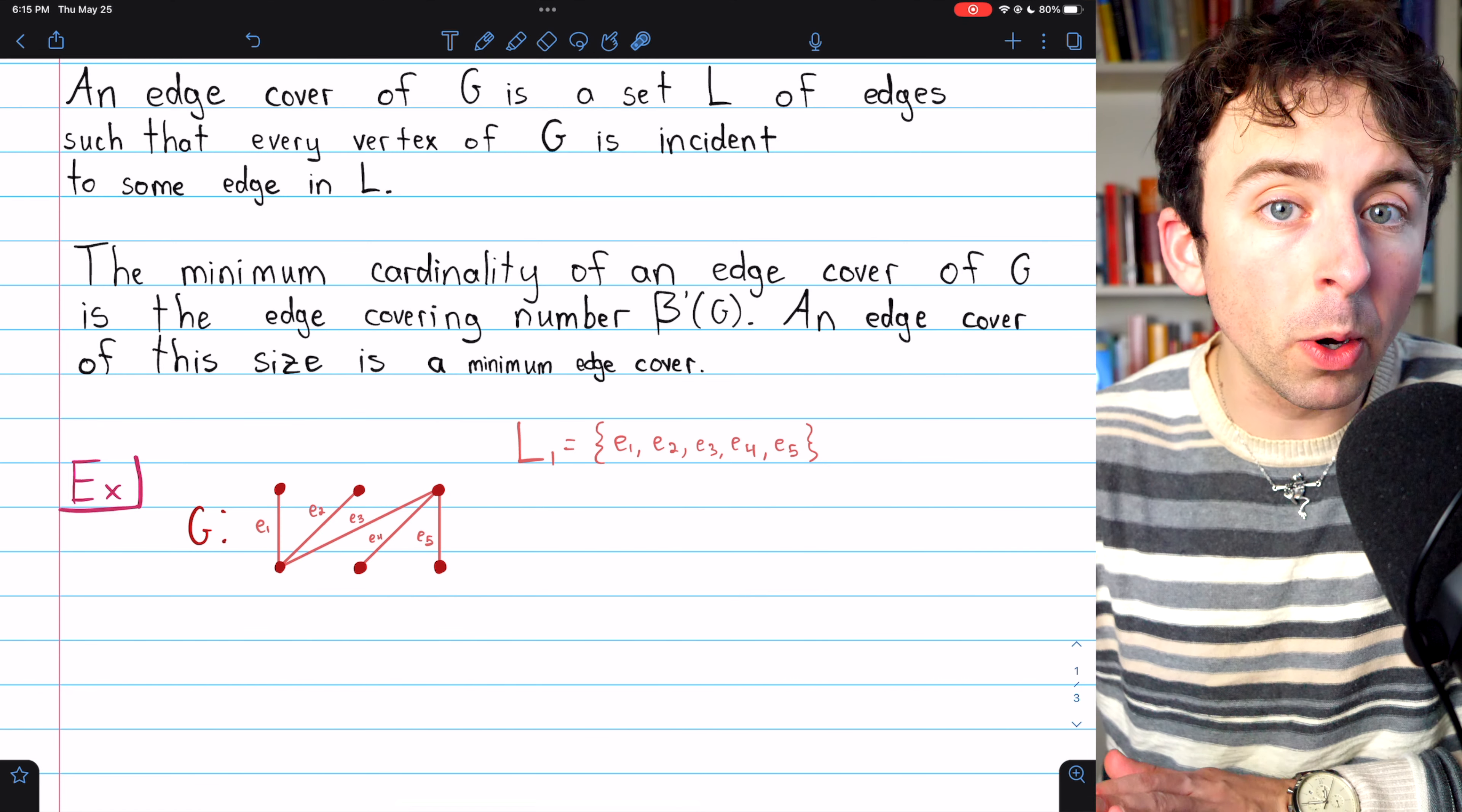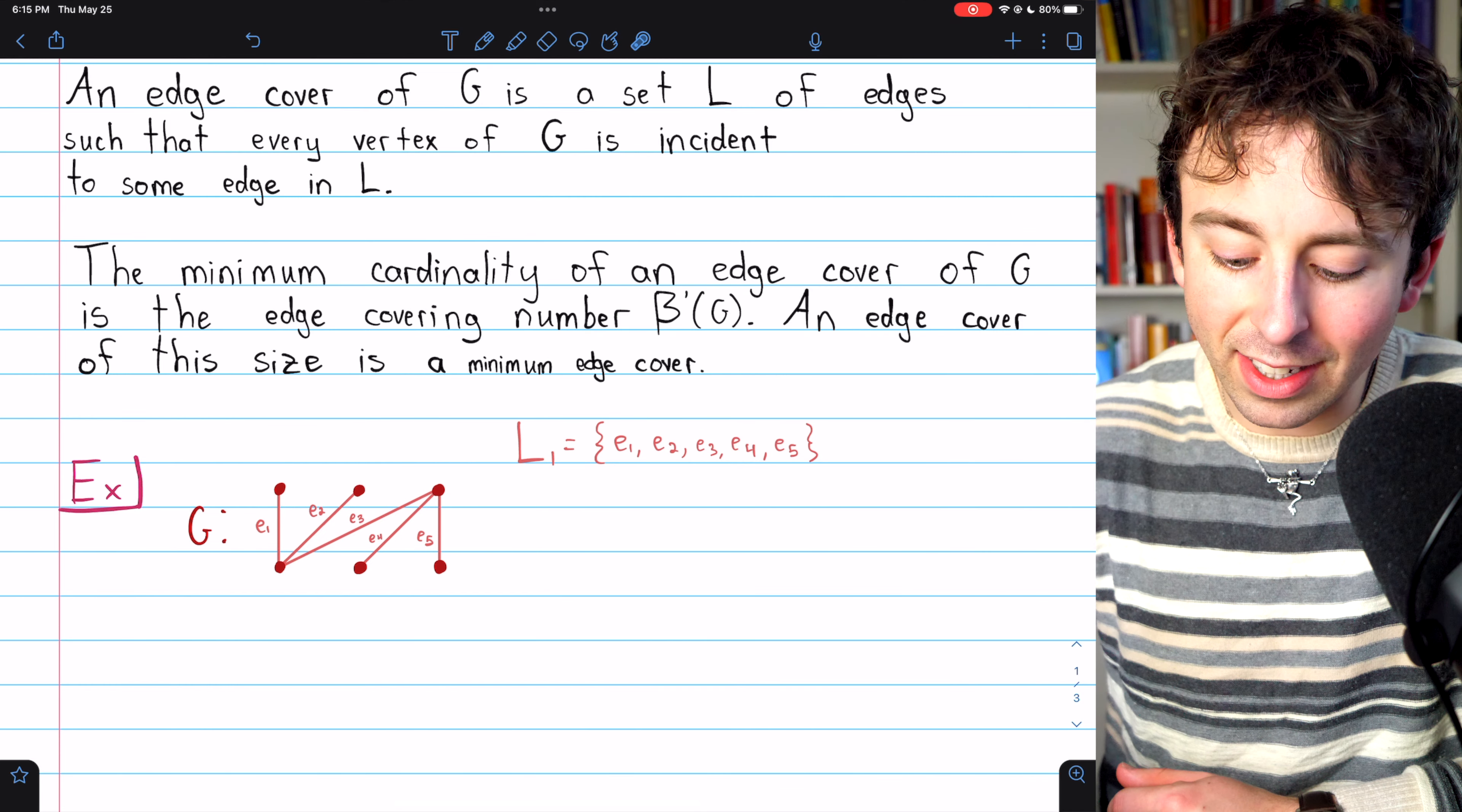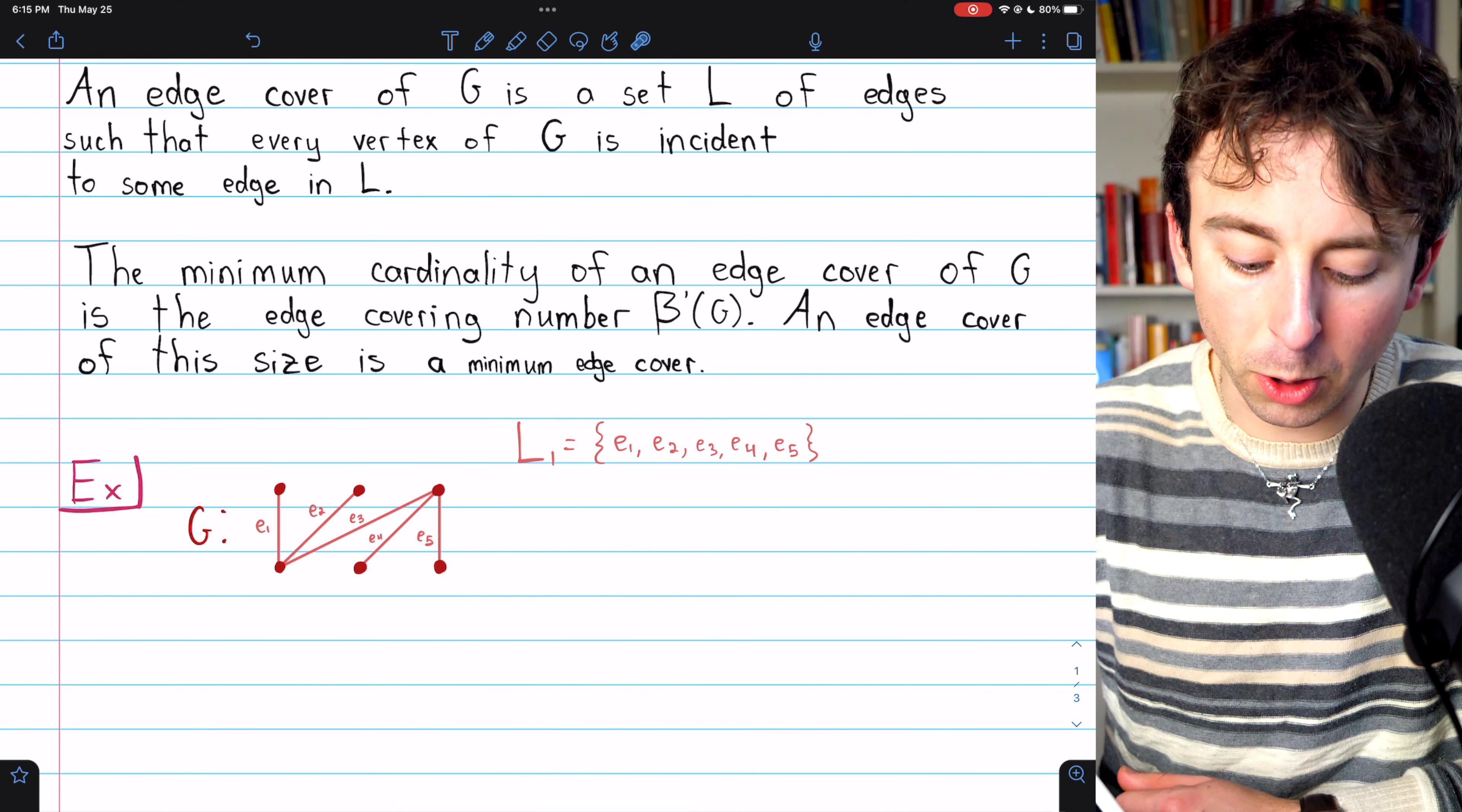L1 just contains every single edge of the graph, which is almost always an edge cover. We'll talk about when it isn't in a minute. Perhaps you can think about that for yourself. Let's go over this real quick. This vertex here is indeed covered by L1 because L1 contains the edge E1. So the vertex is incident to at least one edge in the cover. Similarly,